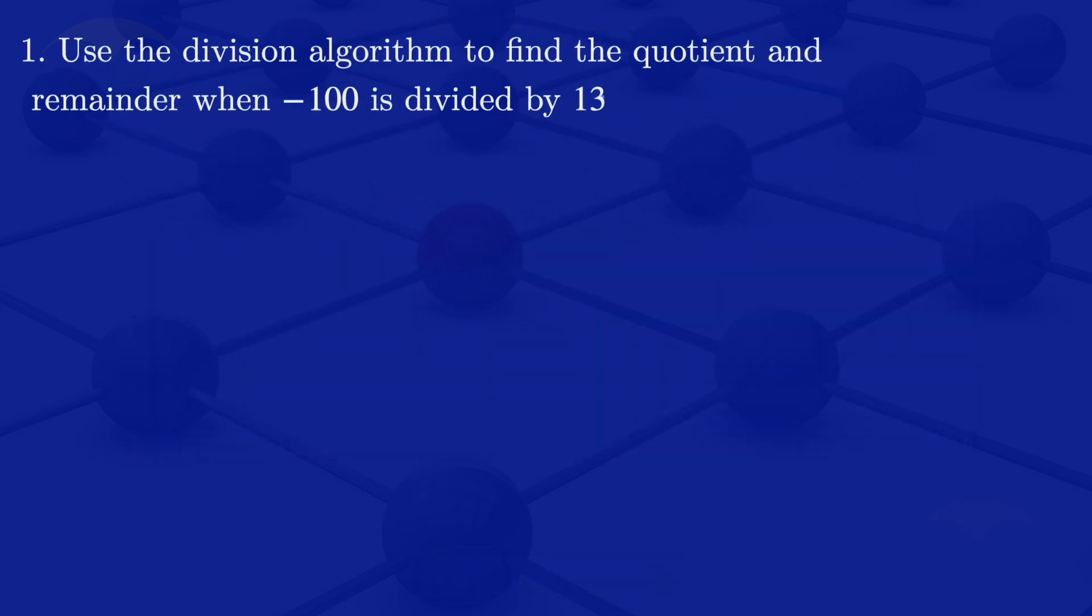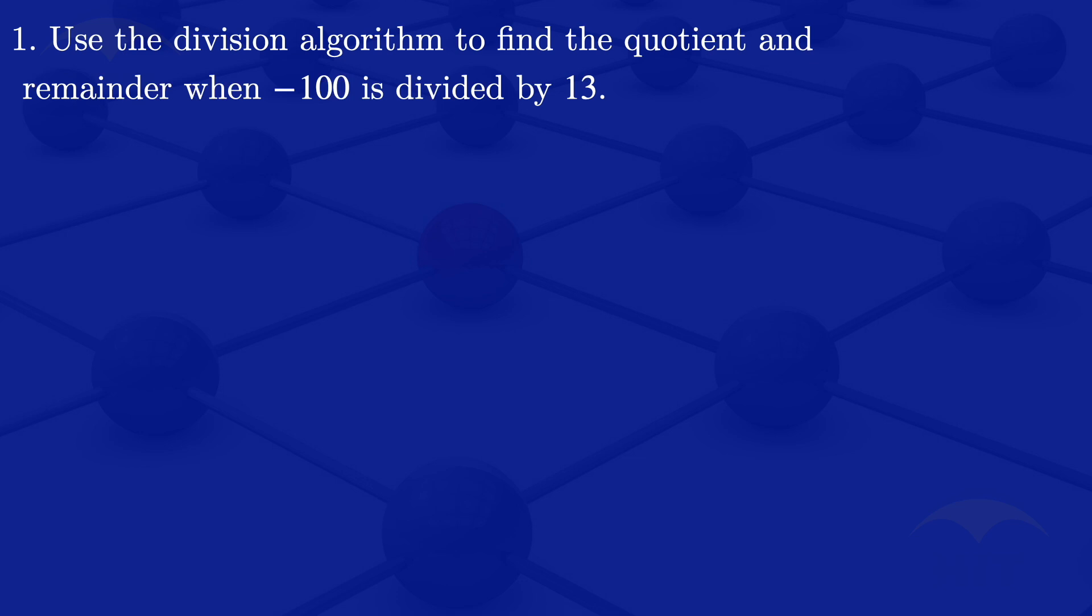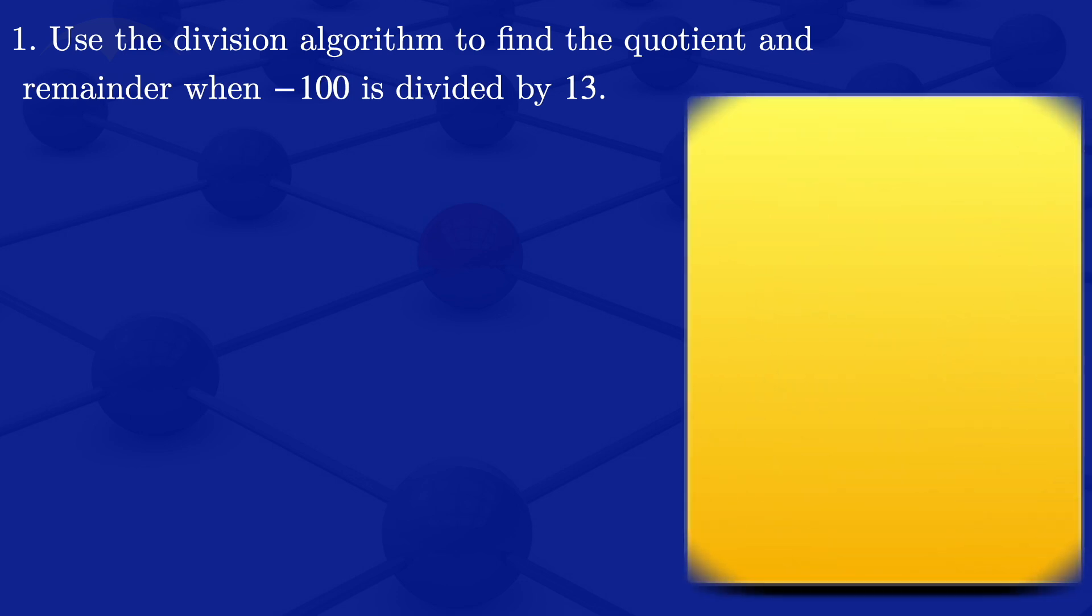So to answer those two questions, I'll start by looking at the following. For the division algorithm, we have B equals AQ plus R, where A is the divisor, B is the dividend, Q is the quotient, and R is the remainder.